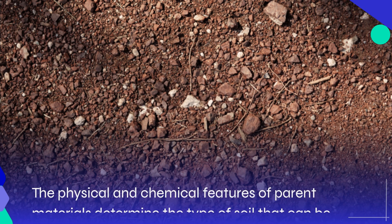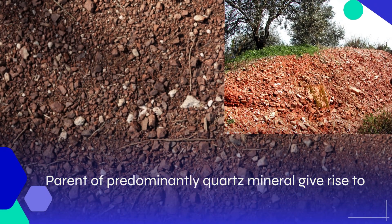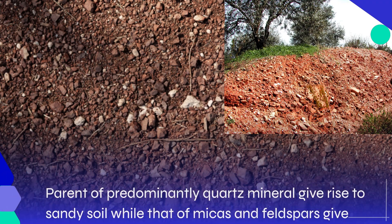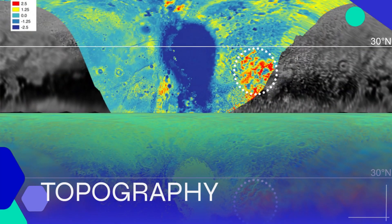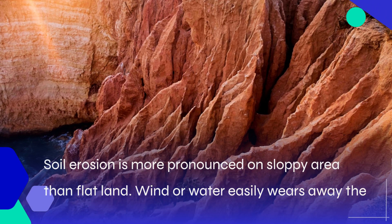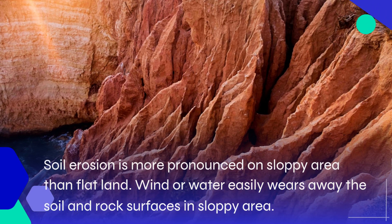Parent material: the physical and chemical features of parent materials determine the type of soil that can be obtained from such material. Parent material of predominantly quartz mineral gives rise to sandy soil, while that of micas and feldspars gives rise to clay soil.